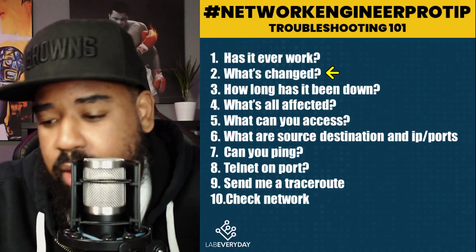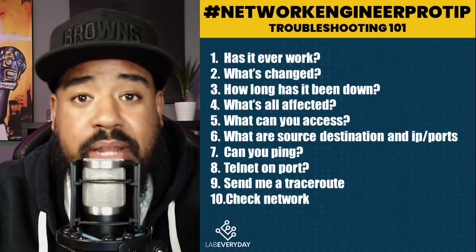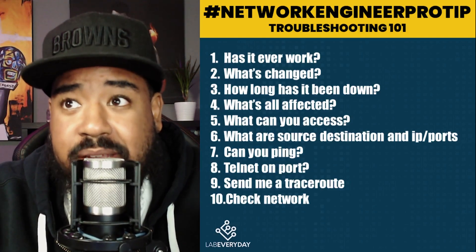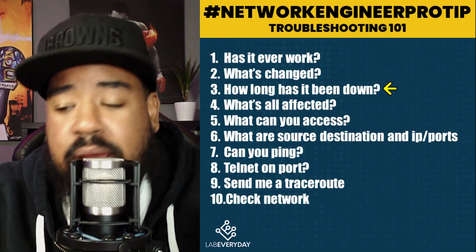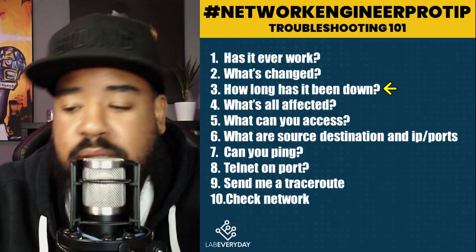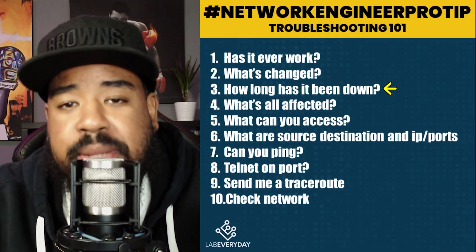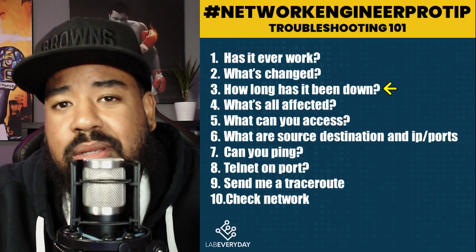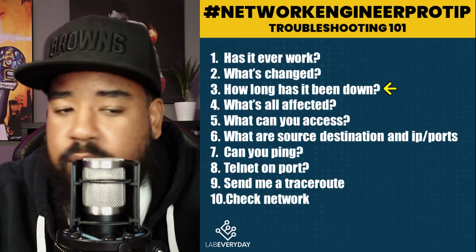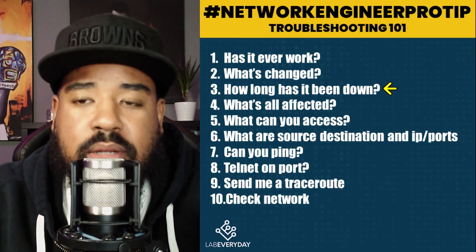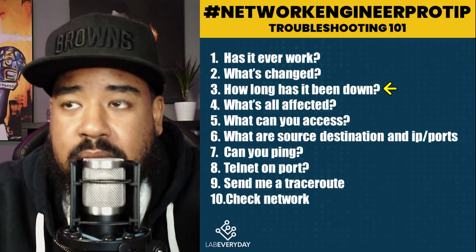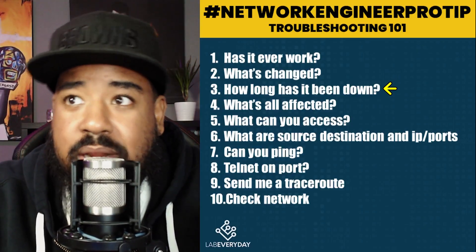Now, if no changes have happened and it has worked before, the third question is: how long has it been down? This is important — if it's been down for two months, we need to figure out why it's been down so long. If it just went down, then let's figure out why it went down.